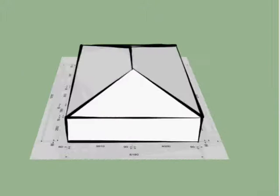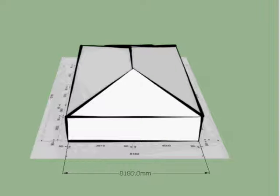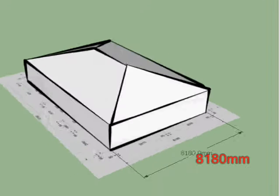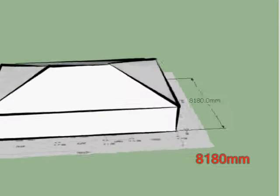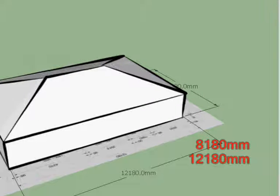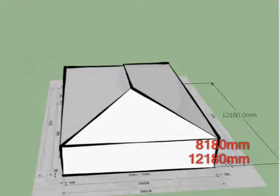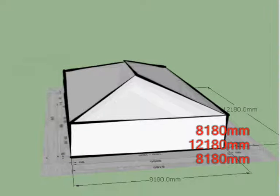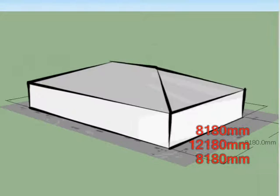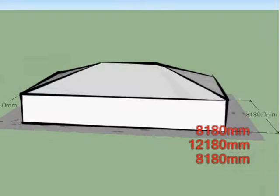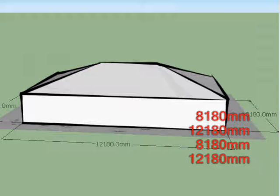So we first off mark on these outsides. You see 8180. The next side is 12180. The side after that, keep going around, is 8180. And the final side is 12180. To work at the perimeter, what we would do is we would add all of these measurements together.